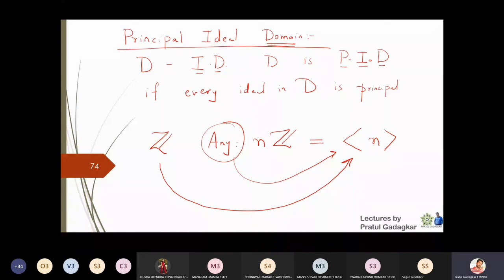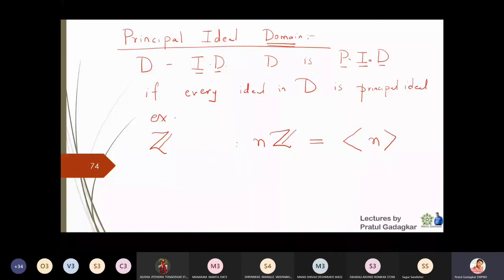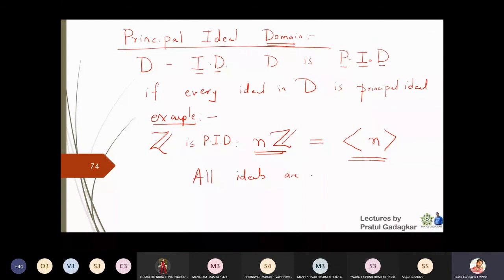The best example of a PID is the set of integers Z. The reason is that any ideal in Z is of the form nZ, which is generated by n, and therefore all ideals are principal. If all ideals turn out to be principal ideals, then that set itself we start calling a Principal Ideal Domain.